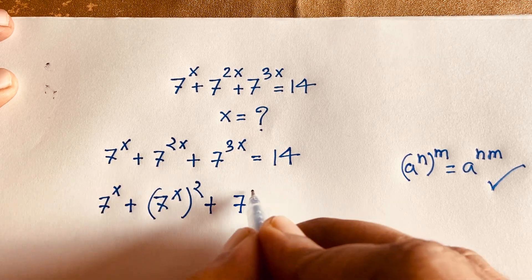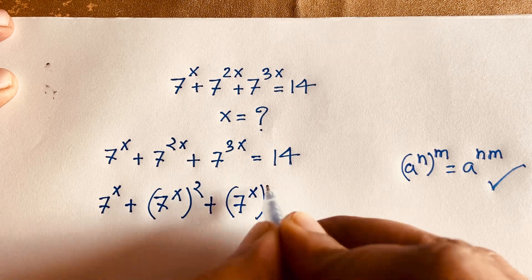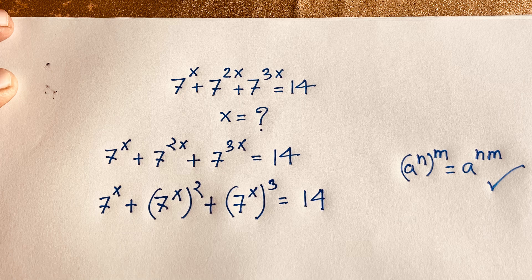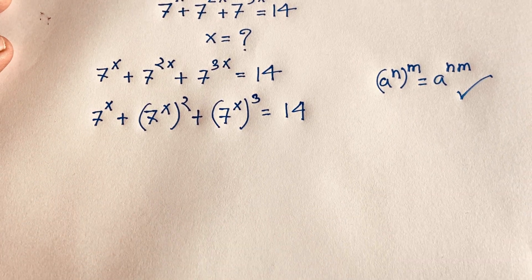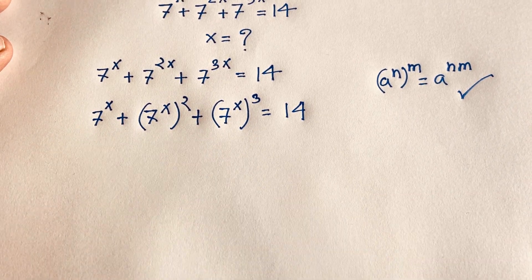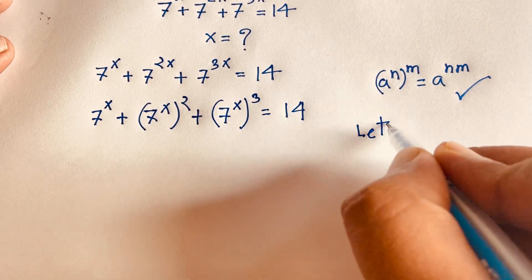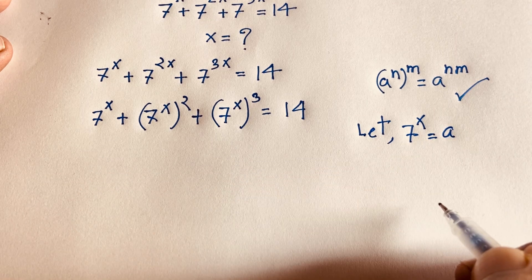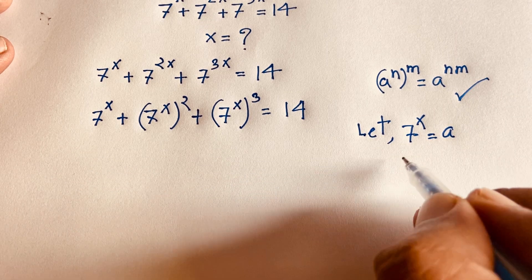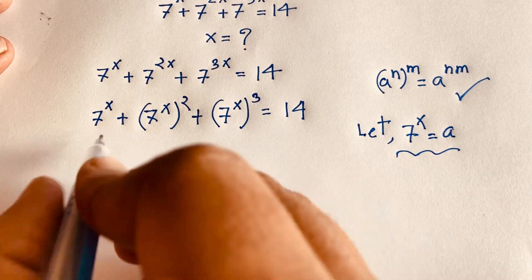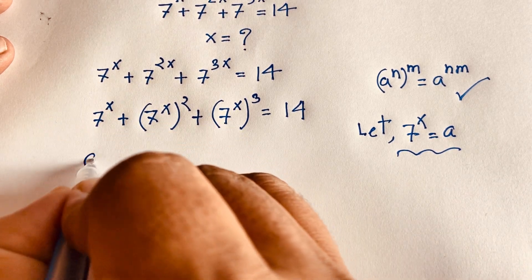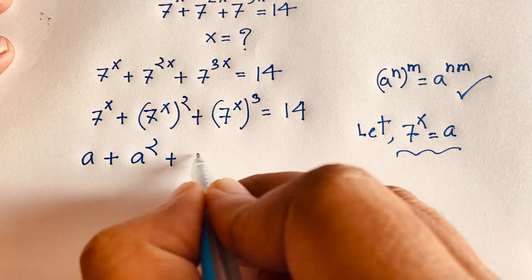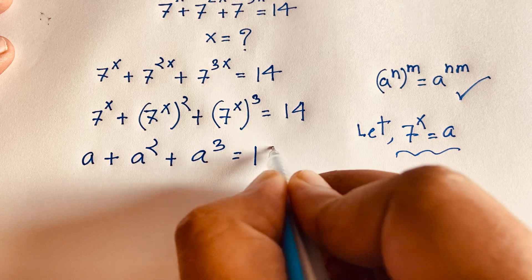Similarly, 7 to the power 3x is 7 to the power x whole to the power 3. Now, 7 to the power x is common throughout. So let 7 to the power x equal to a. Substituting this value into the equation, we get: a plus a squared plus a cubed is equal to 14.